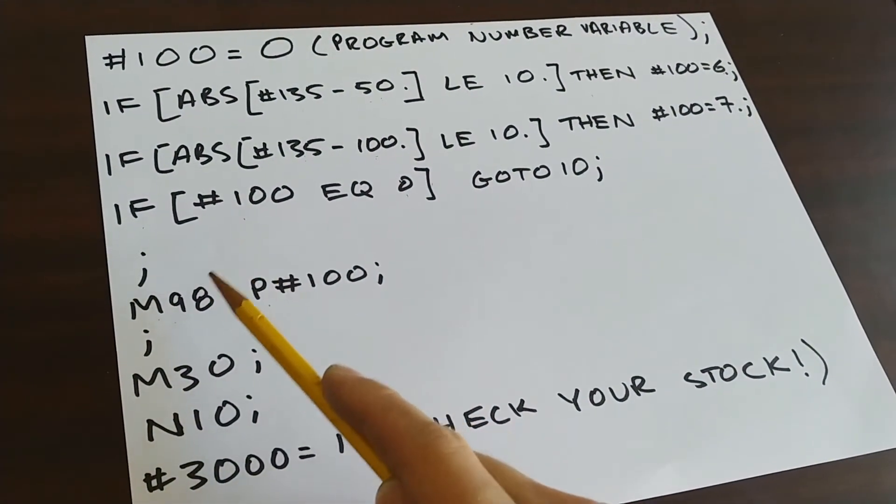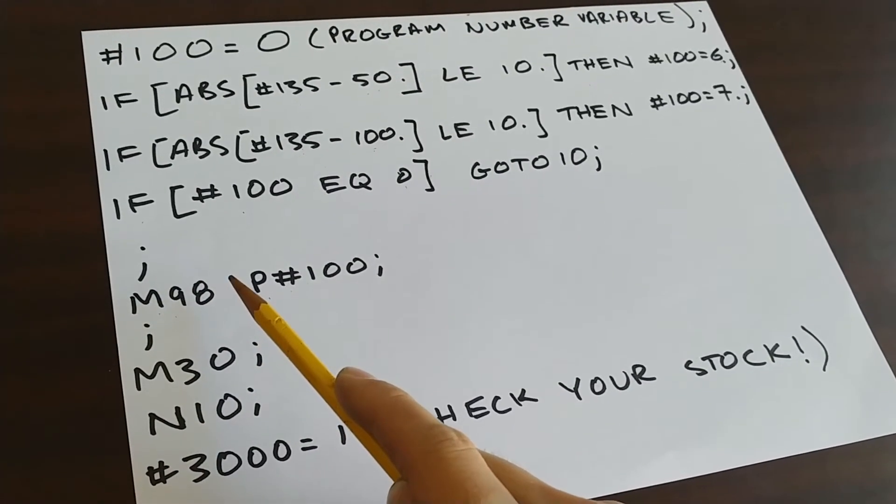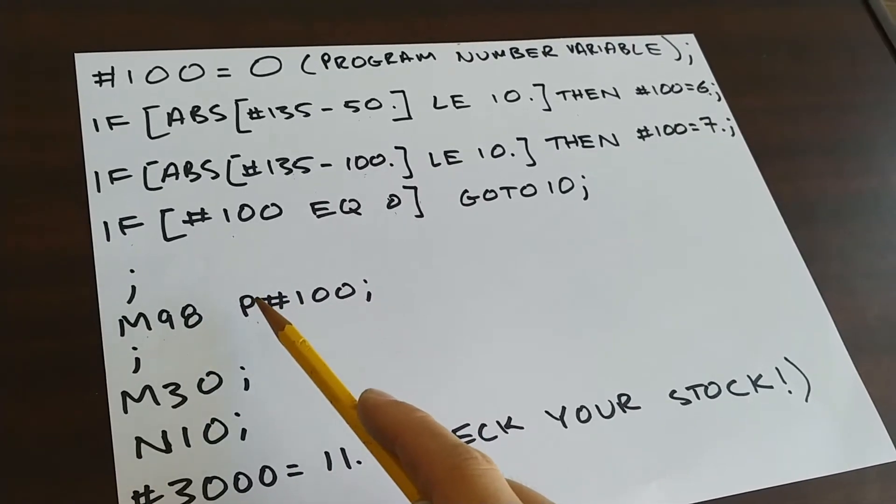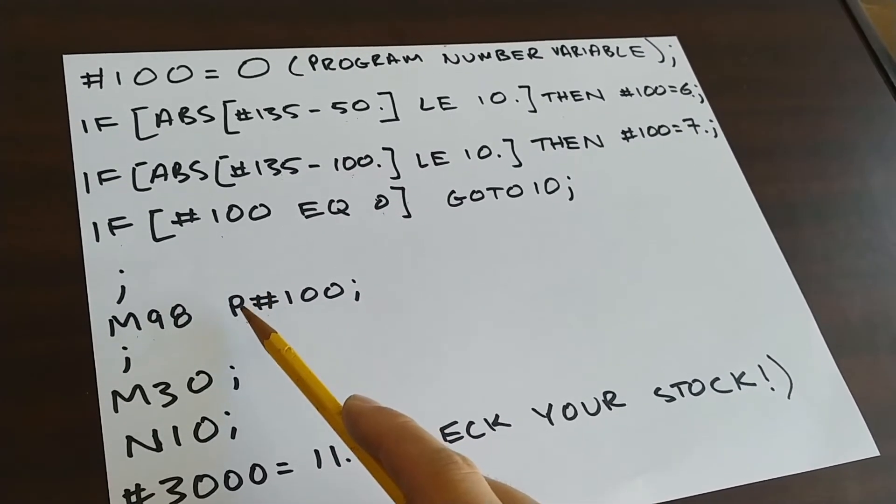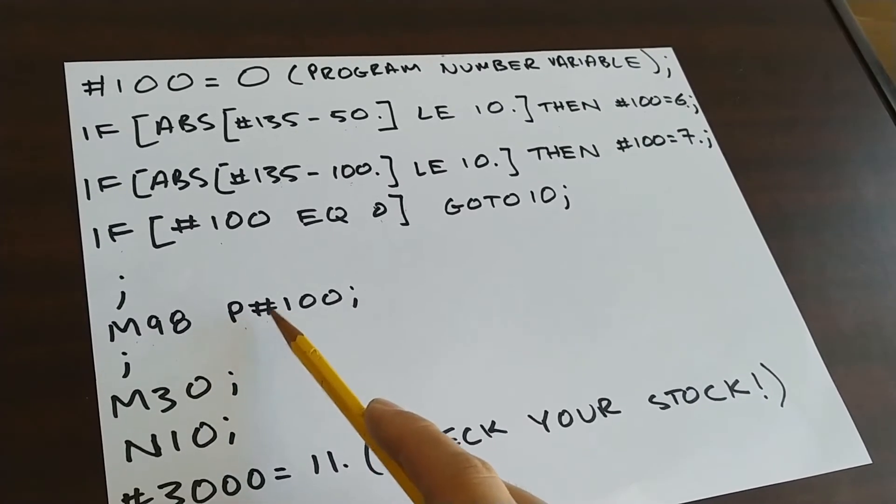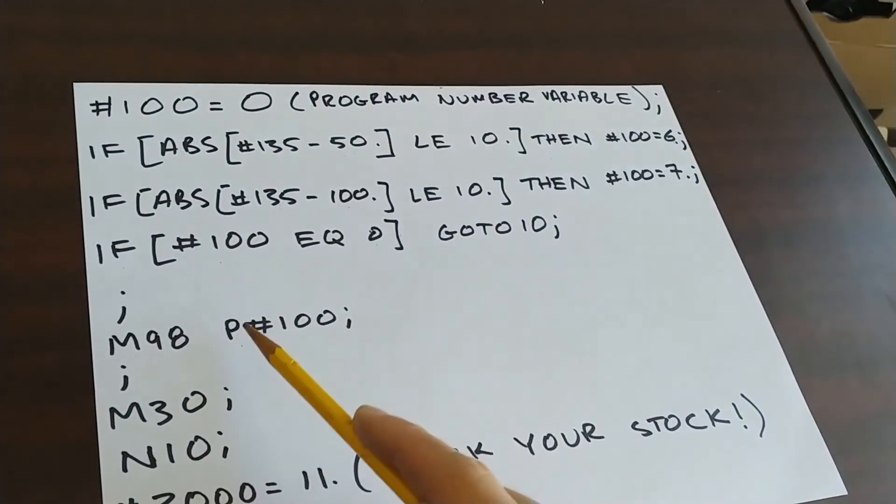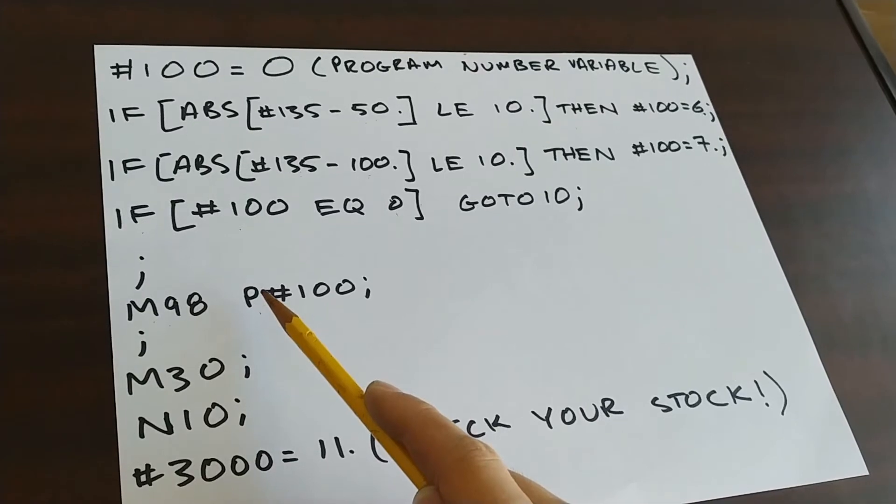So then, after that, I'm going to get to the M98, which is the subroutine. Basically, what this will allow me to do is run another program inside this program. So the program number I'm going to run is pound 100. So if this statement was true, pound 100 will be set to 6, and when I get to this line, the machine is going to jump into program 6.